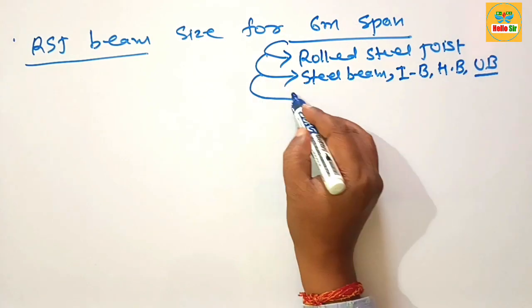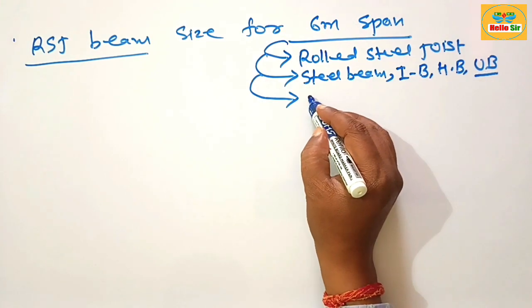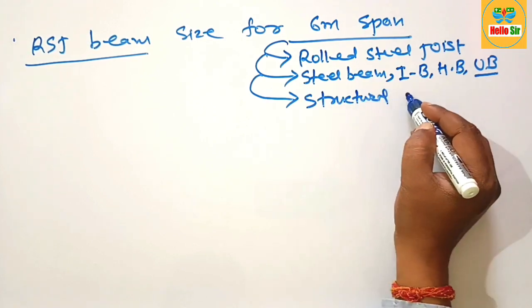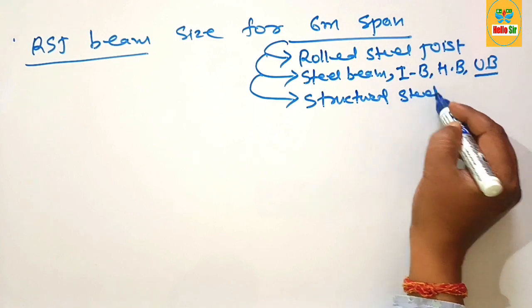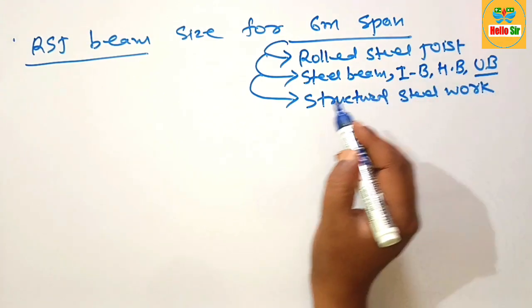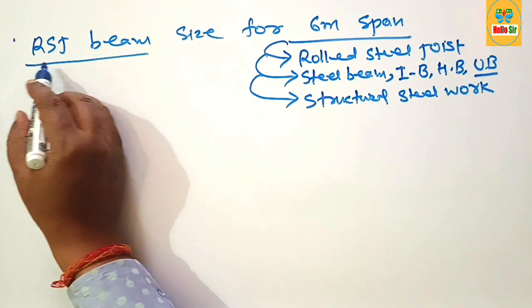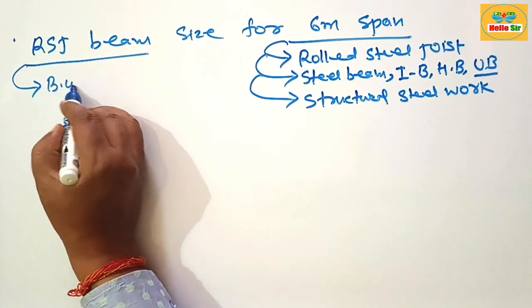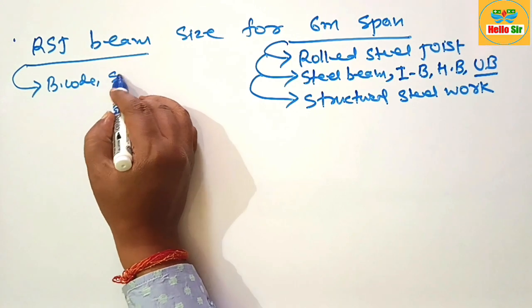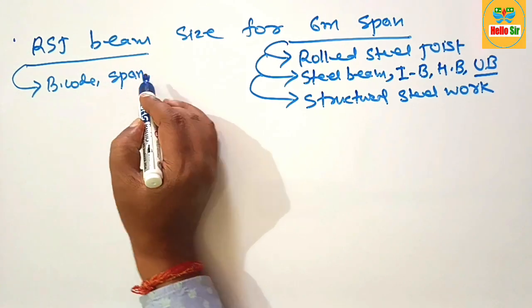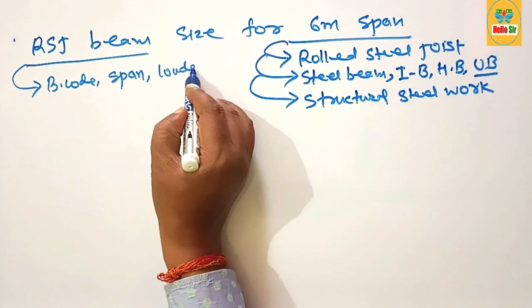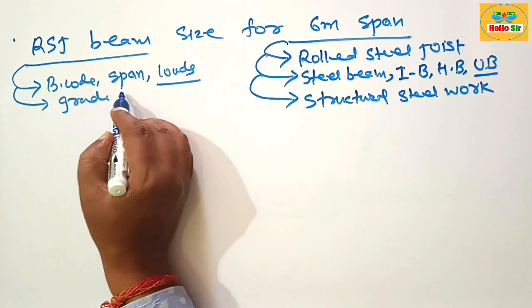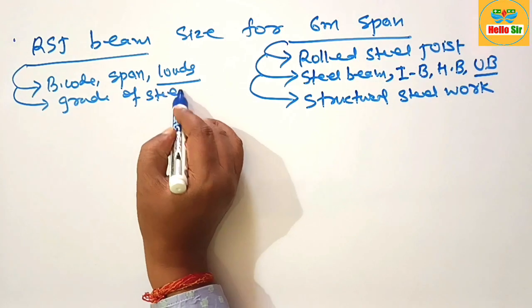And what is their function? It is structural steel work in construction industry. The size of RSJ beam depends on many factors like building code in your area, the span between the supports, the load coming on the beam, and the grade of steel. These are the major factors.